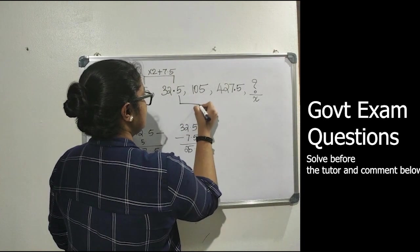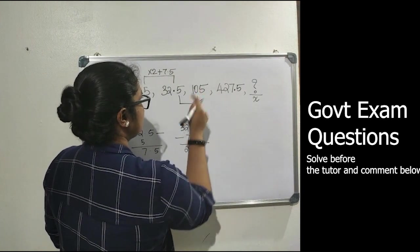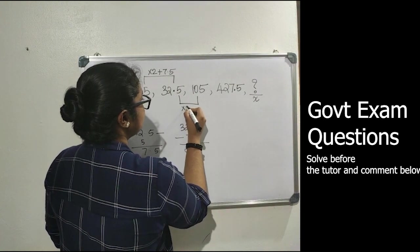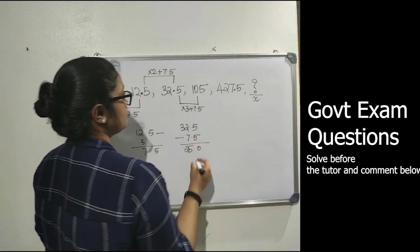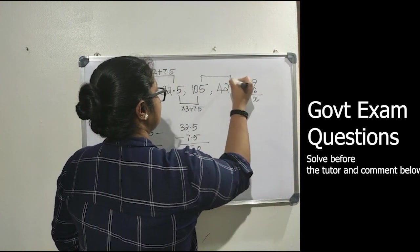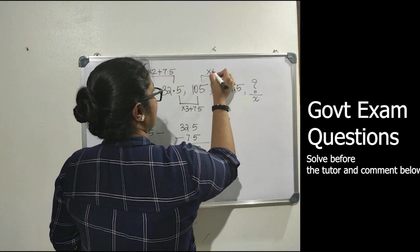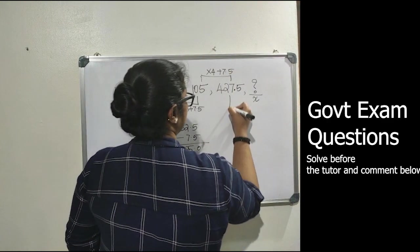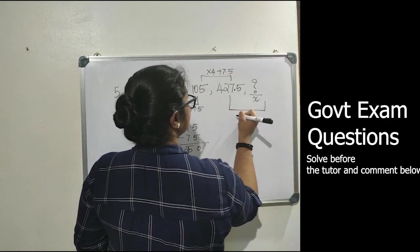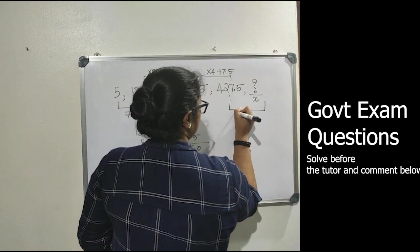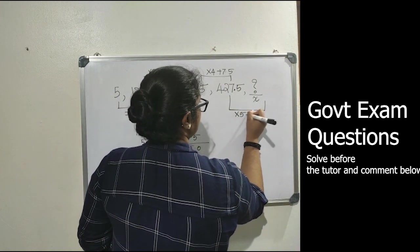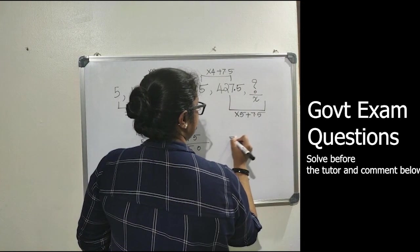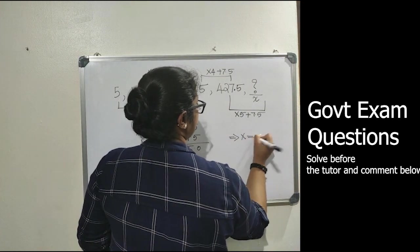Similarly, 405 is 32.5 into 3 plus 7.5. Then definitely this will be 105 into 4 plus 7.5. The value of x equals 427.5 into 5 plus 7.5, which implies x equals 427.5 into 5 plus 7.5.